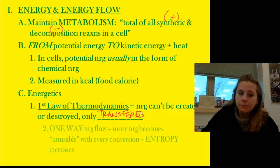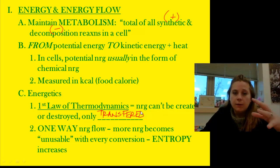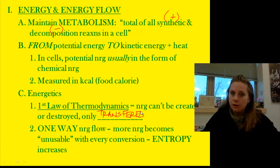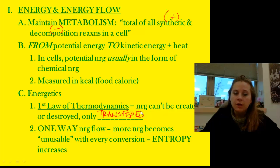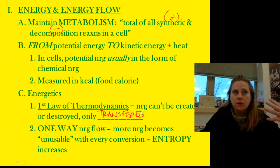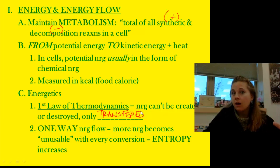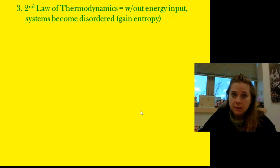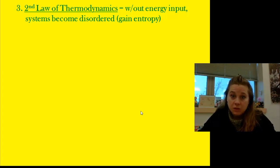Energy flow is one-way: as energy gets transferred from one form to another, it becomes less and less usable because entropy increases. Entropy is the natural state of becoming unbalanced, unstable, or chaotic. The second law of thermodynamics deals with that idea — left unchecked, systems just become disordered and continually gain entropy.